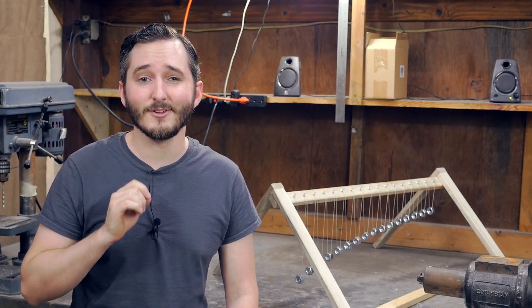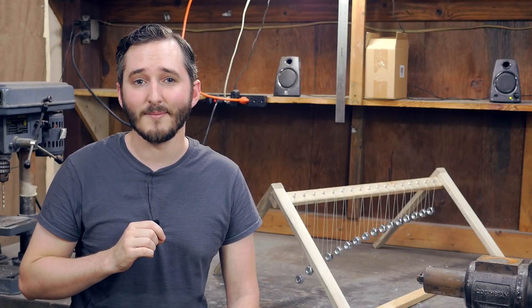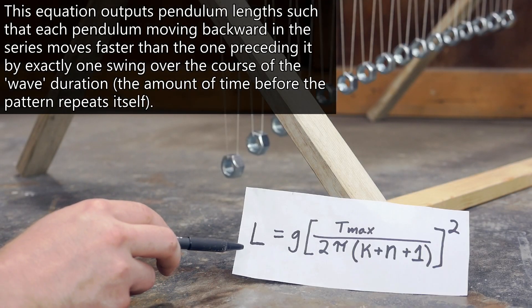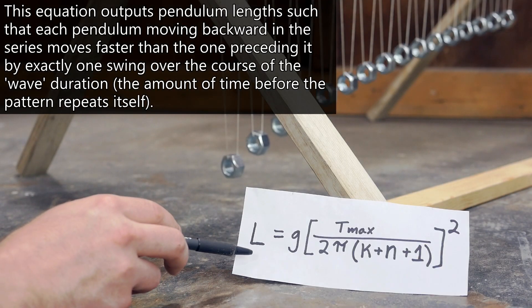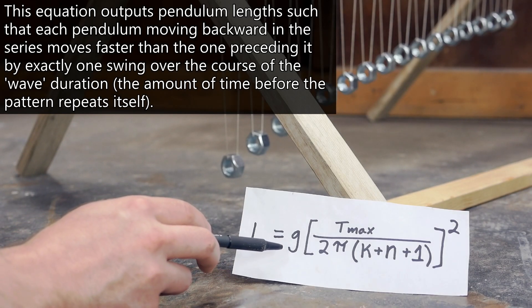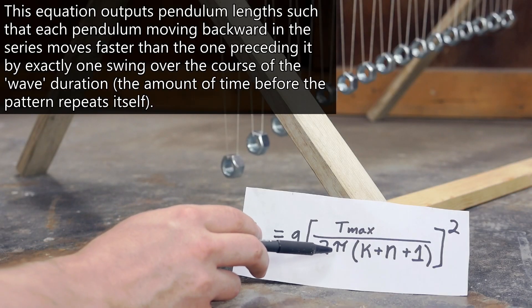That's not quite correct. You actually do need a very specific curve that can be determined with some math. This is the equation to use in order to determine the length of each pendulum in the array. And we have L, which stands for length. G, which stands for gravity, which is 9.8 meters per second squared. We have pi, 3.14.